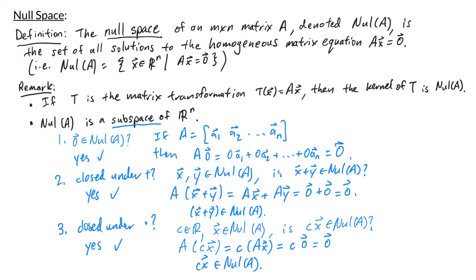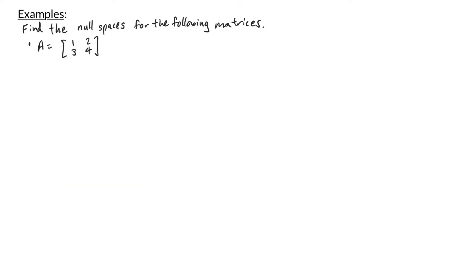Now let's look at some examples of actually finding the null space of a matrix. In the first example, we have A, the 2 by 2 matrix with entries 1, 2, 3, 4. We want to find the solutions to the equation A times x equals the zero vector. To solve this, we row reduce the augmented matrix: [1, 2 | 0; 3, 4 | 0].